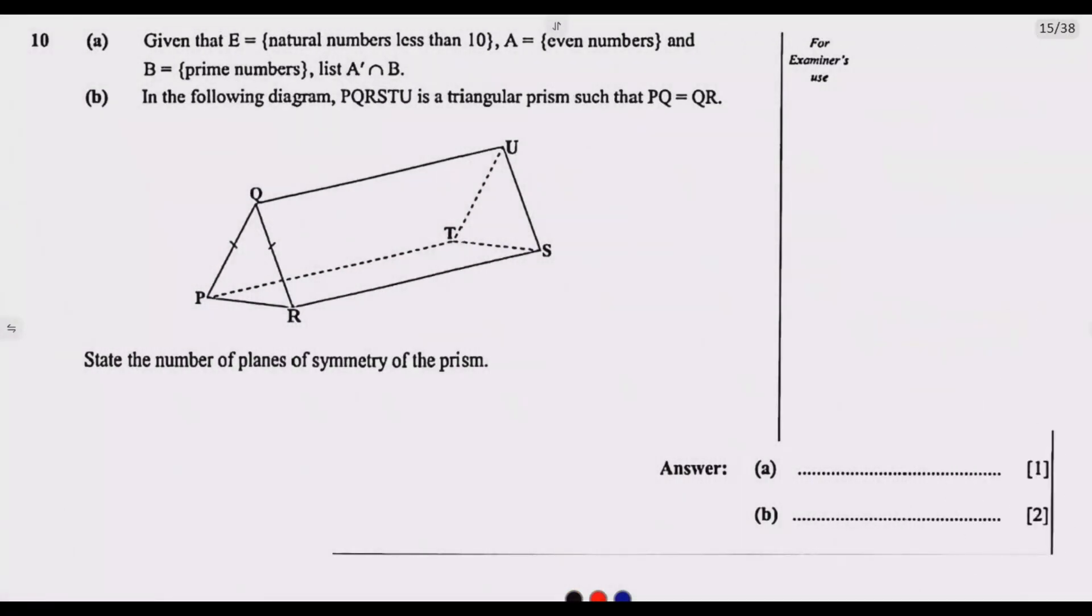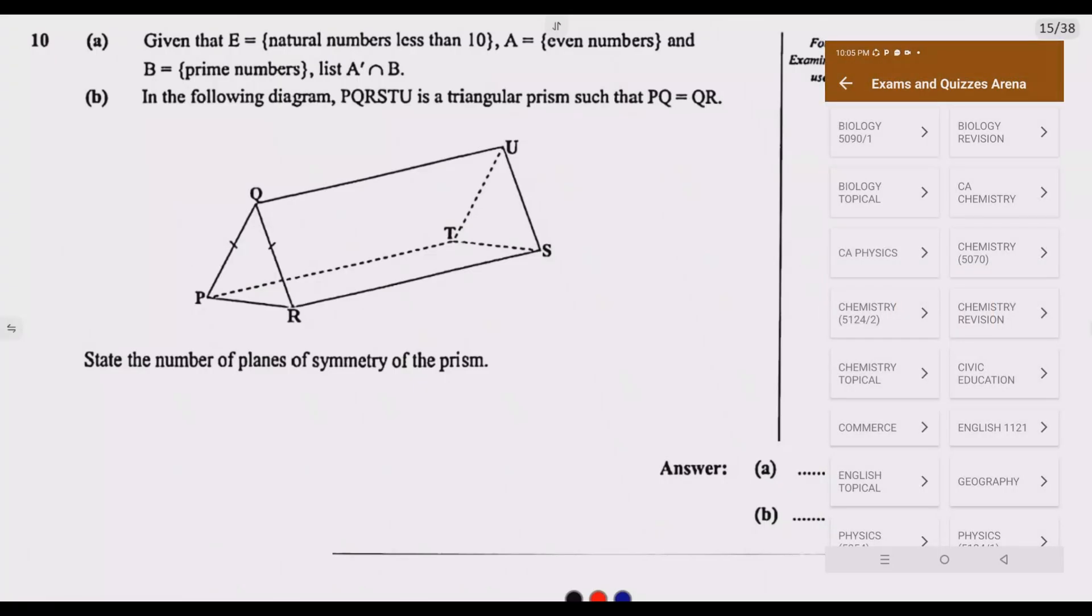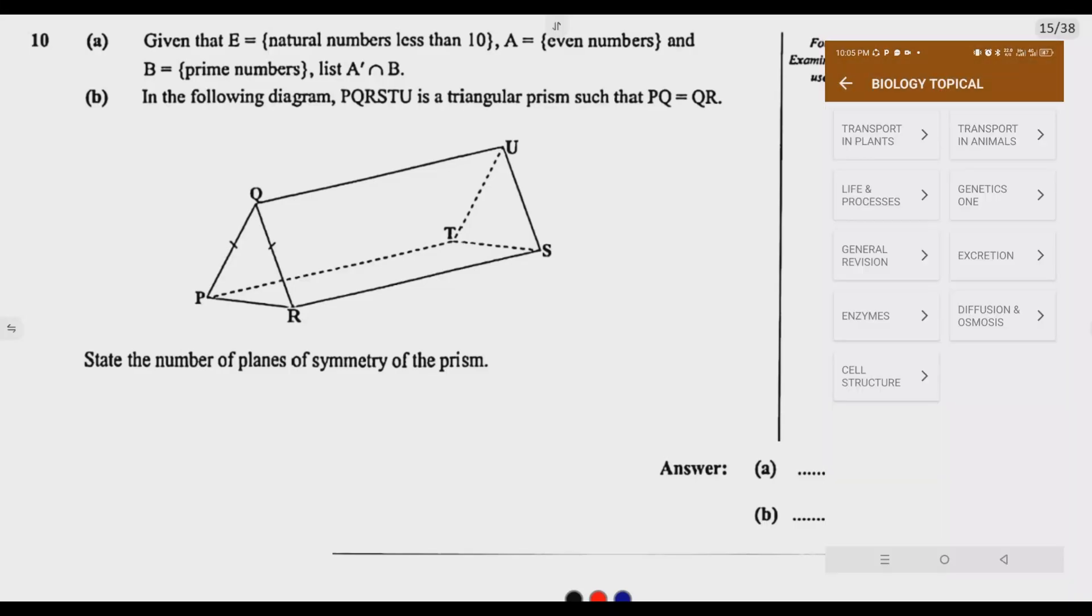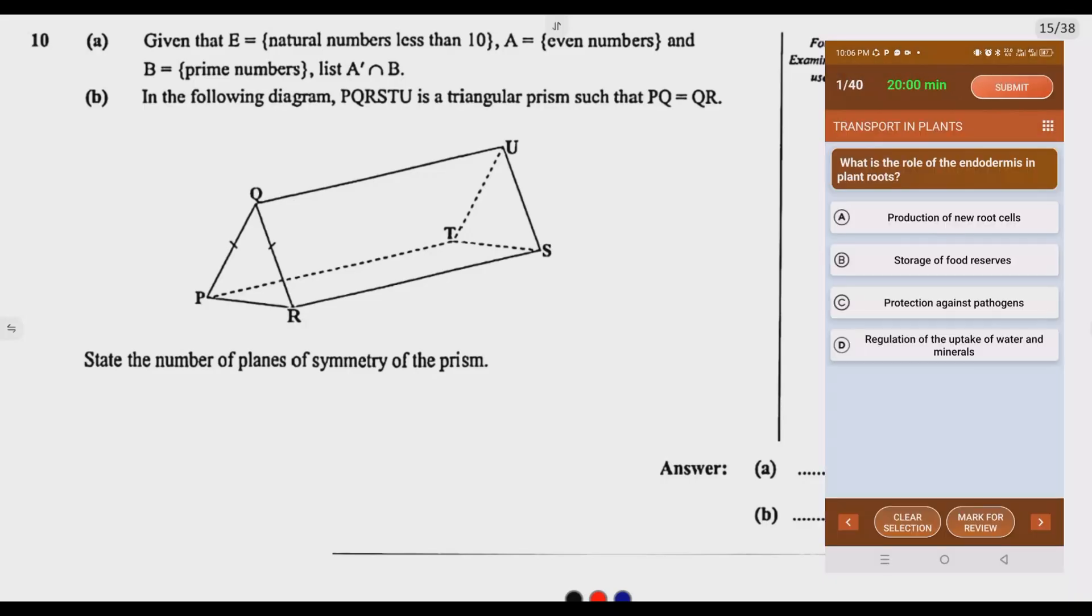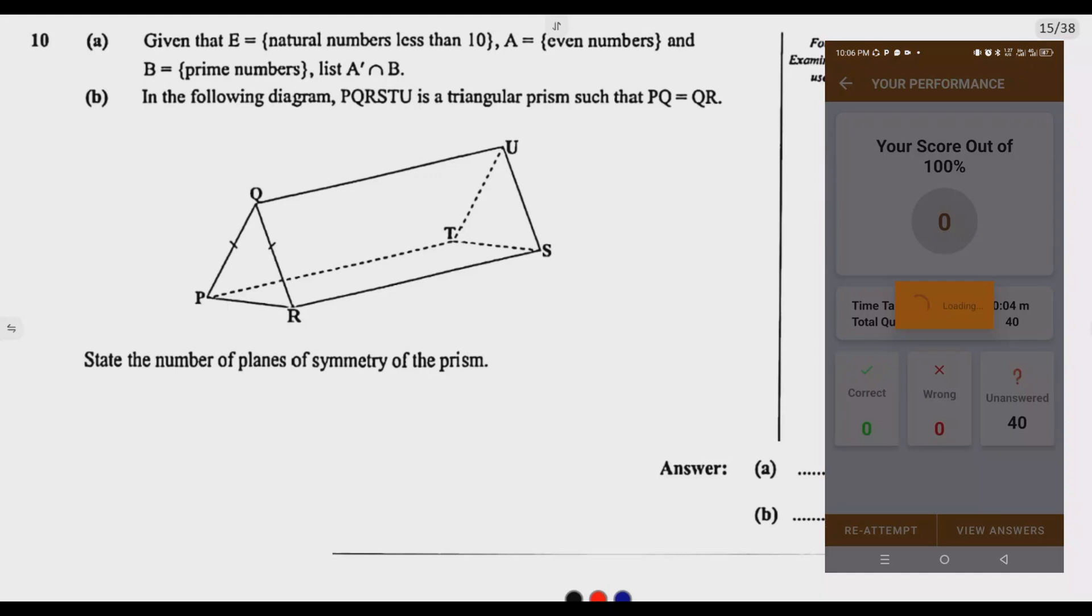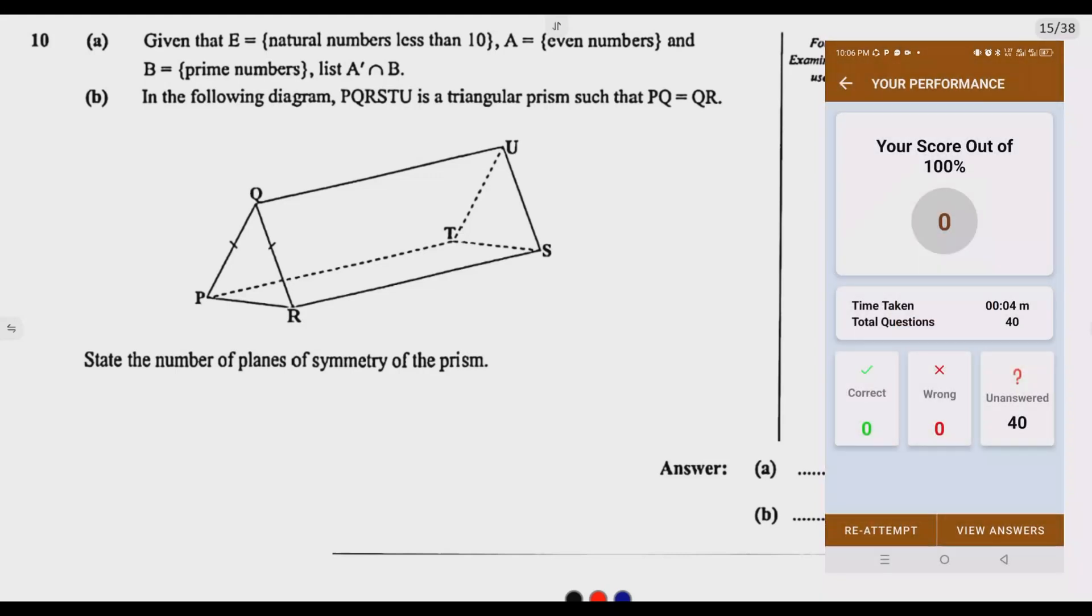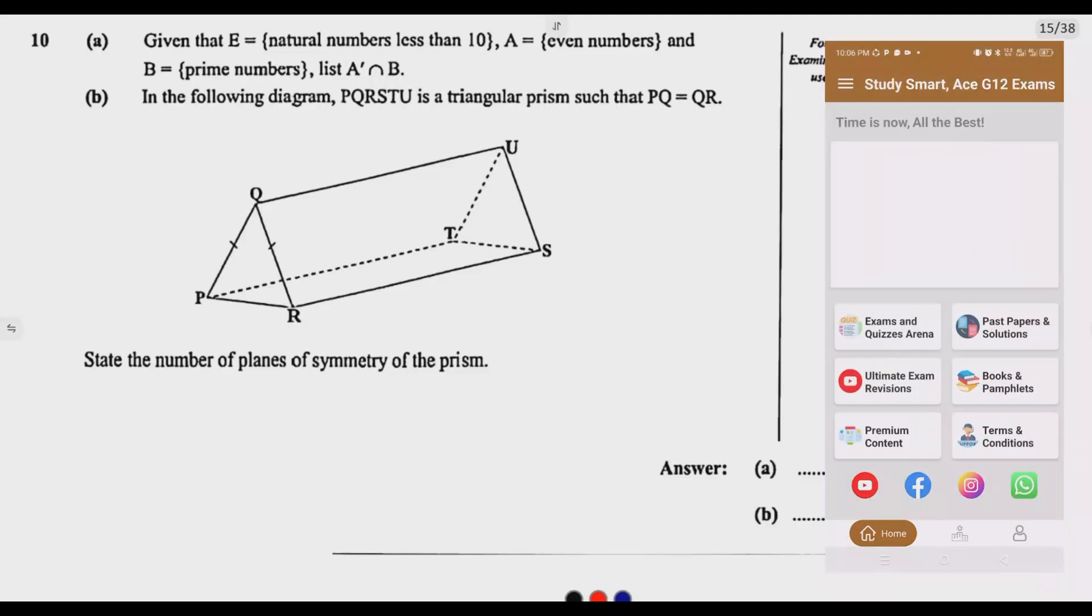Let us look at question A 10. 10 A reads, given that E is a set of elements that contains natural numbers less than 10, which is the universal set. So if you see the symbol E, that's the universal set. Then A is a set that contains even numbers, and B is a set that contains prime numbers.